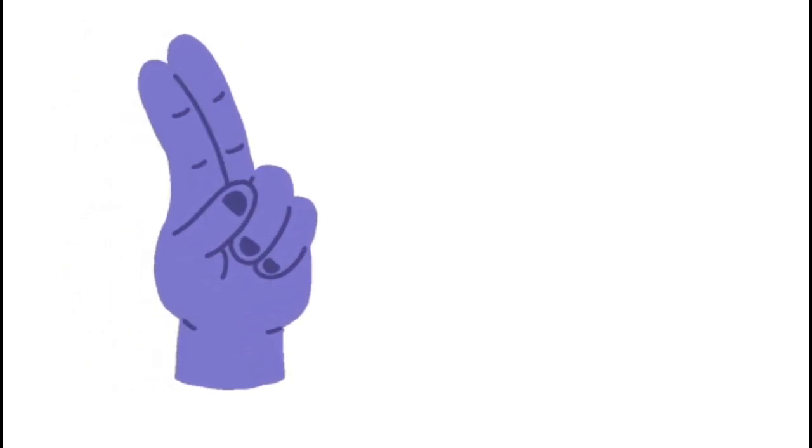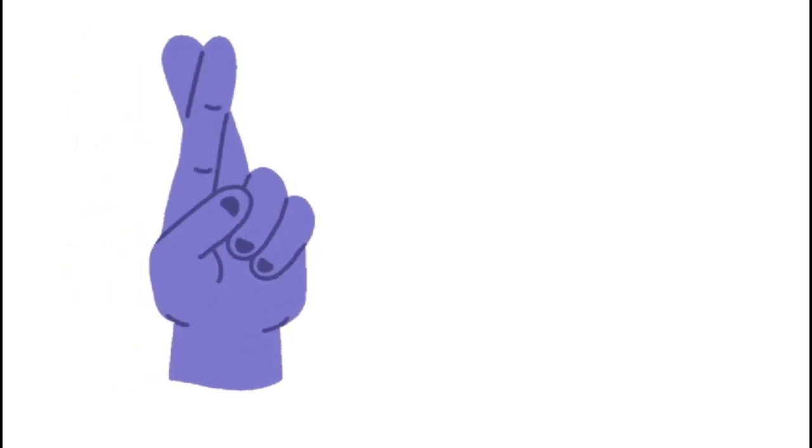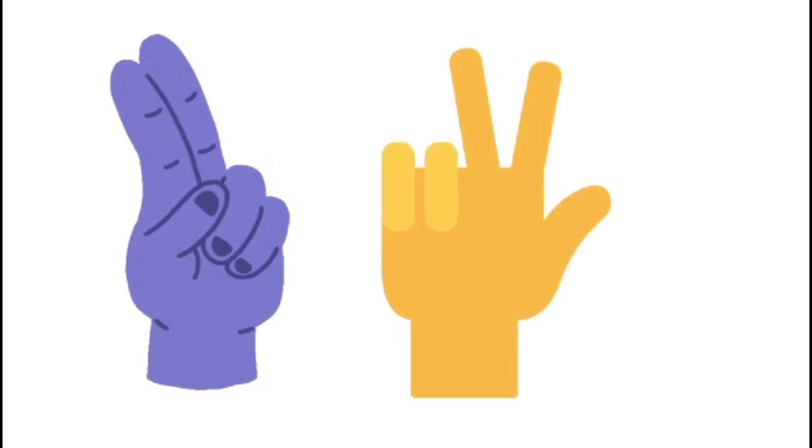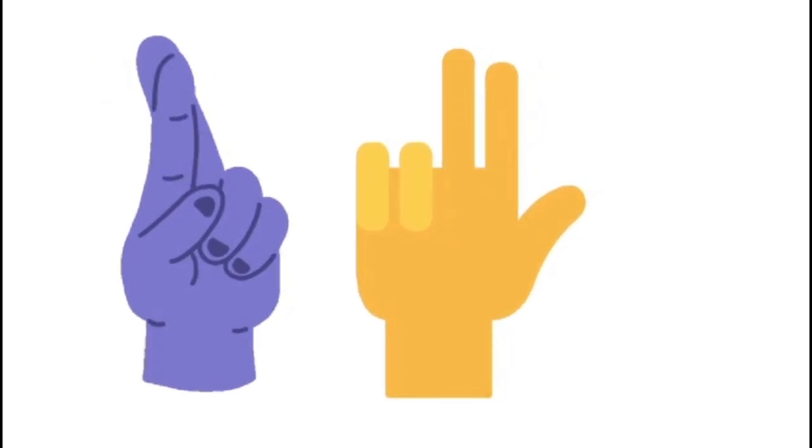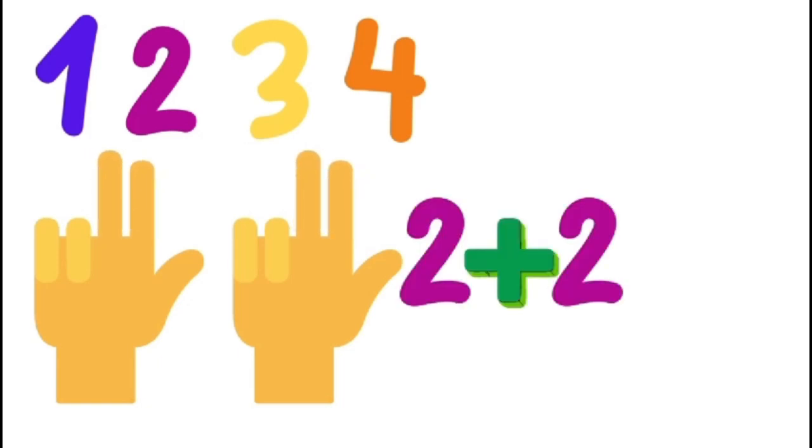Now let's see. I have two fingers up on one hand. I'll raise two more fingers on my other hand. Let's count how many fingers I have now. 1, 2, 3, 4. Two fingers plus two fingers make four fingers.